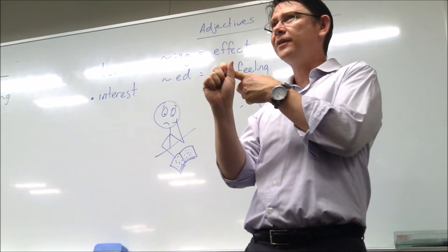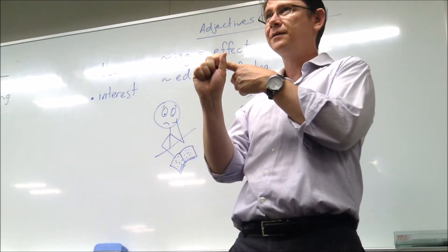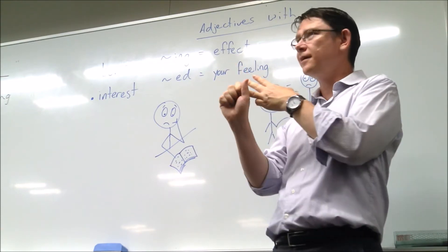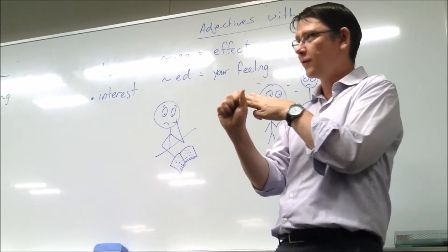So, nouns. What is nouns in Japanese? Okay, verbs? And adjectives? Okay.